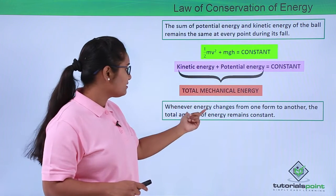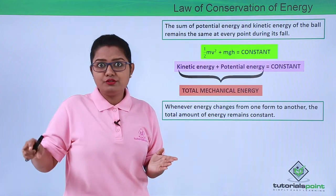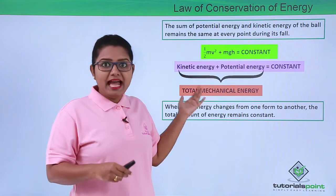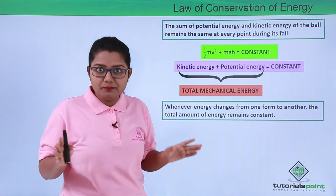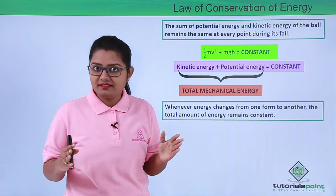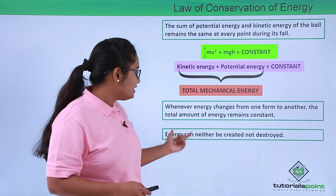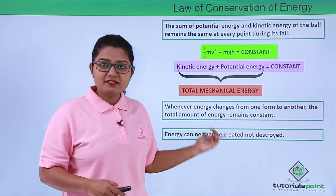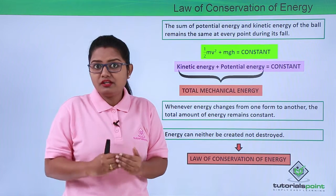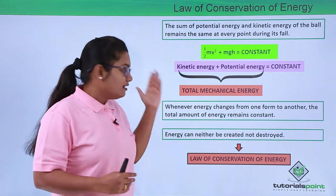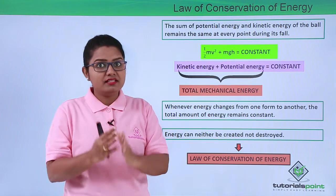We have seen that the energy was getting converted from one form to another, but it was not lost — we have track of what the energy is doing. It is getting converted from one form to another, but the energy is not lost completely. That means energy is not destroyed, and in the same way energy is not created. So we mean to say that energy can neither be created nor destroyed. This is the statement of the law of conservation of energy, which means energy is conserved — it remains constant. Energy can neither be created nor destroyed, and that is what we call the law of conservation of energy.